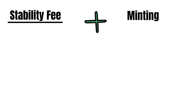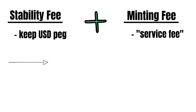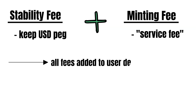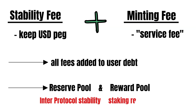There are two fees users have to pay when minting IST: the stability fee and the minting fee. The stability fee aims to keep IST's dollar peg, as the IST price could lose the USD peg when users mint more IST than the market demands. The minting fee is a service fee paid when minting IST. All fees are added to the debt users have to pay back when withdrawing their collateral. The fee revenue is shared between the reserve pool and the reward pool.